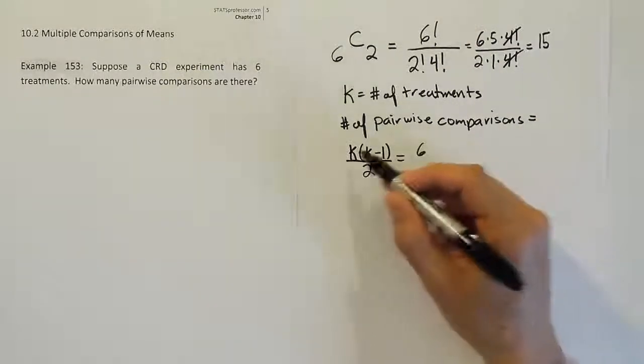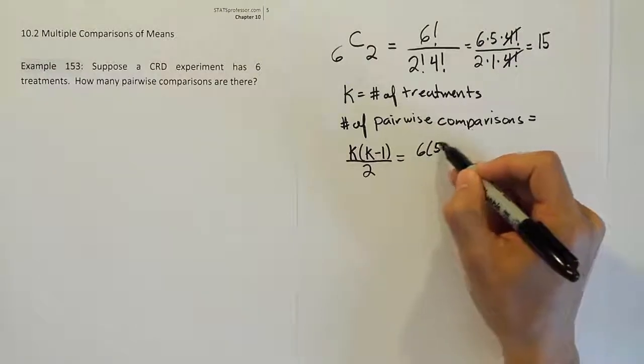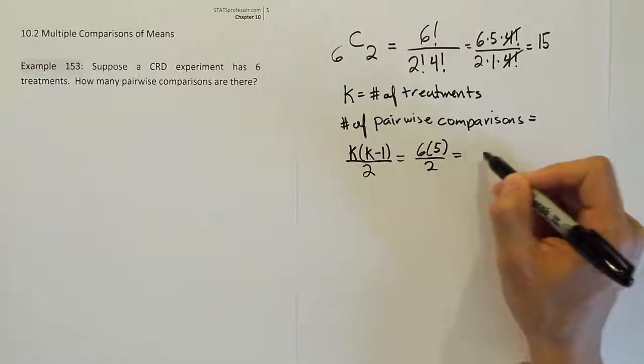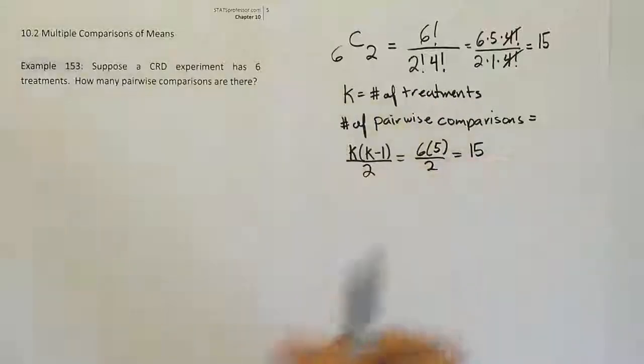So that's what you could do, you could have just said oh six times one minus six which is five divided by two and you would have got the exact same answer 15 done in a different way.